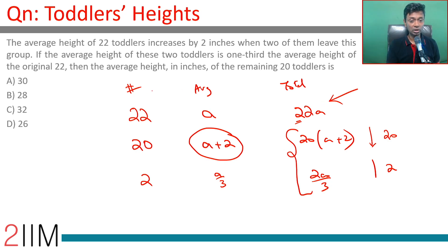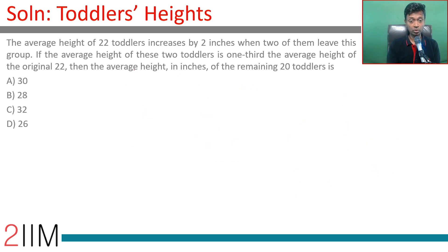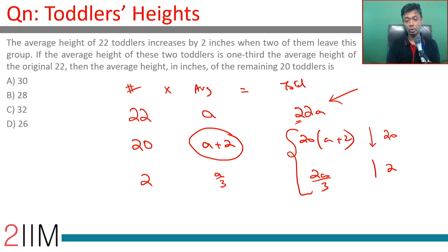This framework is very useful: number of entities times average equals total. So I'm going to write this equation down: 22a equals 20a plus 40 plus 2a by 3.